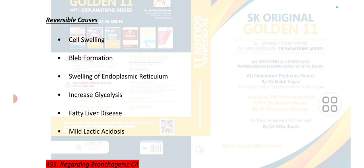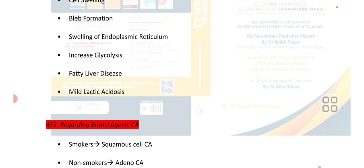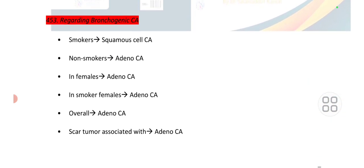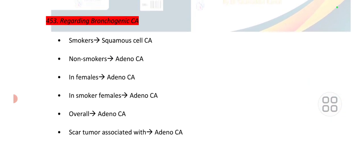Reversible cell injury features are: cellular swelling, bleb formation, swelling of endoplasmic reticulum, increased glycolysis, fatty liver disease, and mild lactic acidosis.